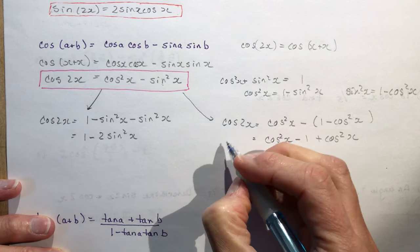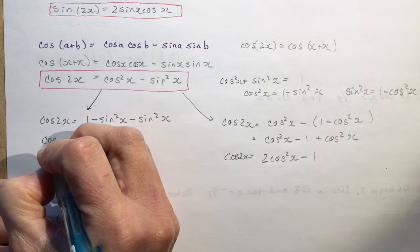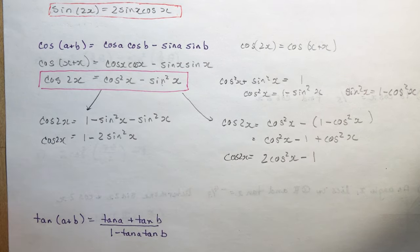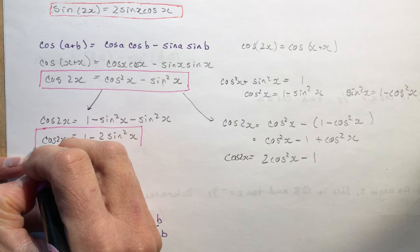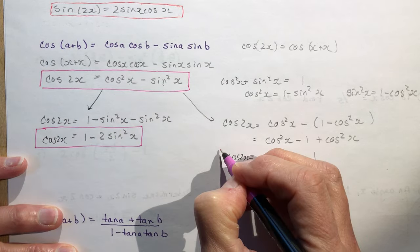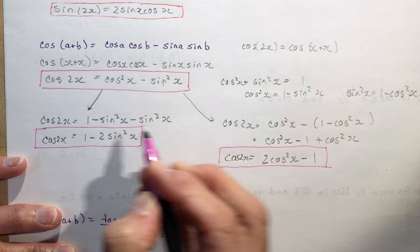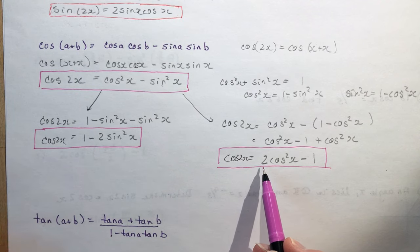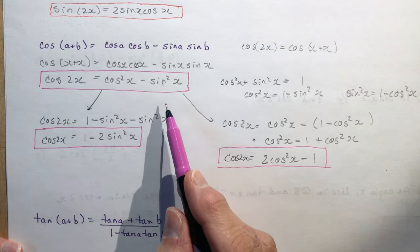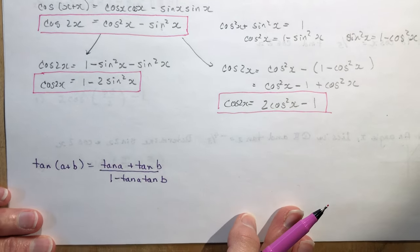So now we have three formulas for cos 2x: cos squared x minus sine squared x, 1 minus 2 sine squared x, and 2 cos squared x minus 1. Depending on the information you've been given, you'll choose one of these to make your life easier.